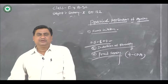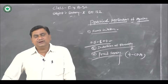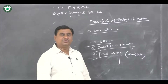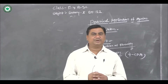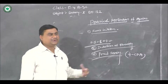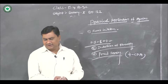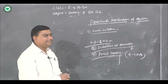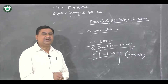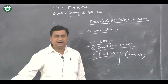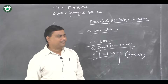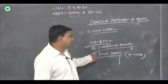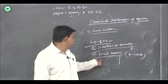Fourth application: auxin plays an important role in parthenocarpy — the phenomenon of development of fruits without fertilization. Auxins like IAA, NAA, and IBA induce enlargement of the ovary, and thus the plant produces seedless fruits. For instance, watermelon is an example.